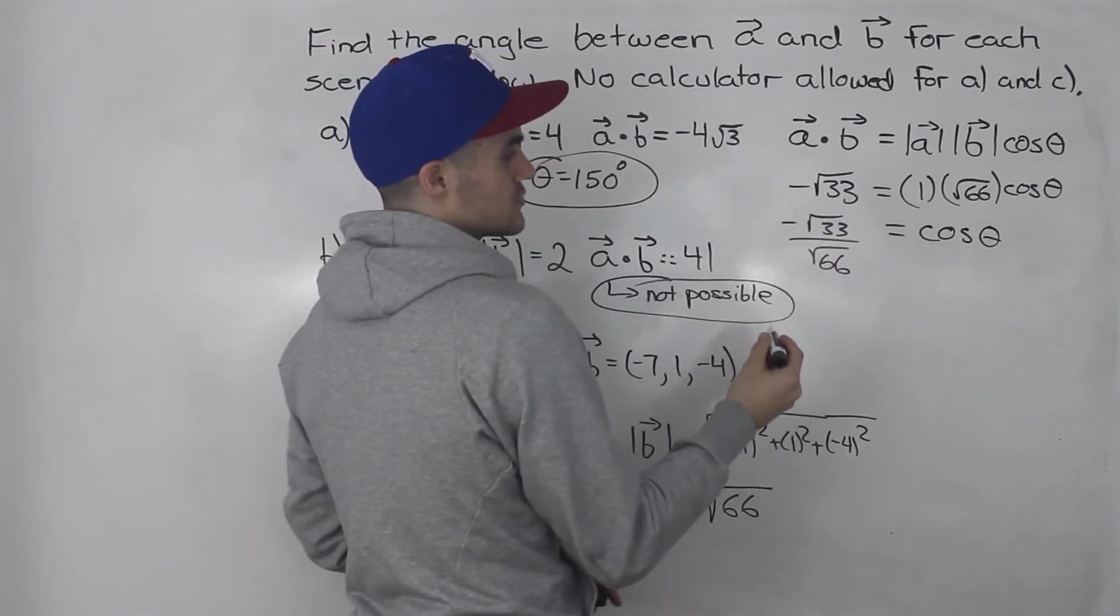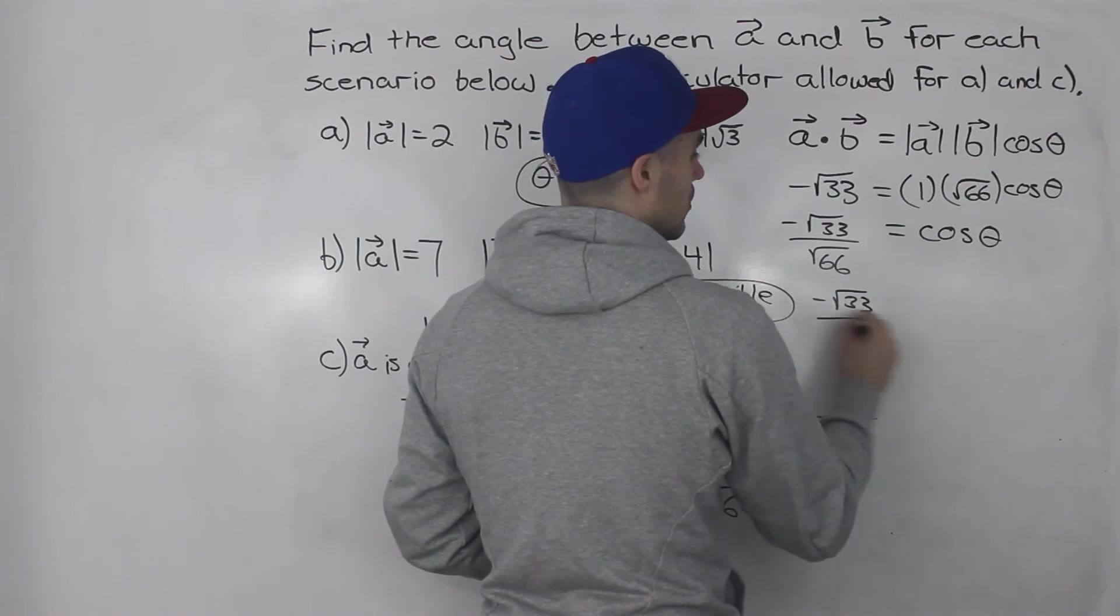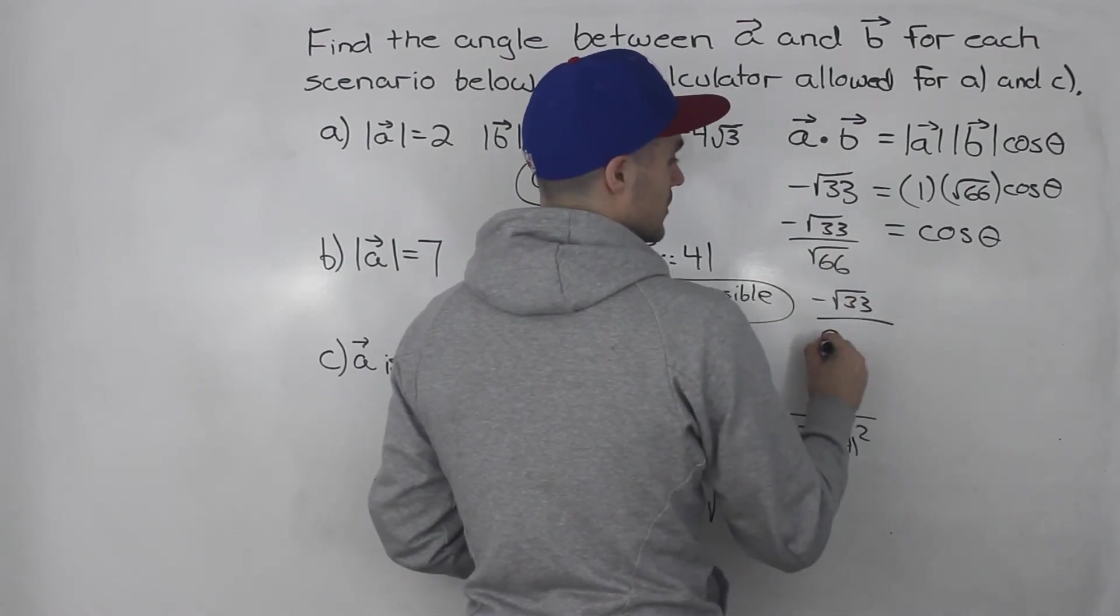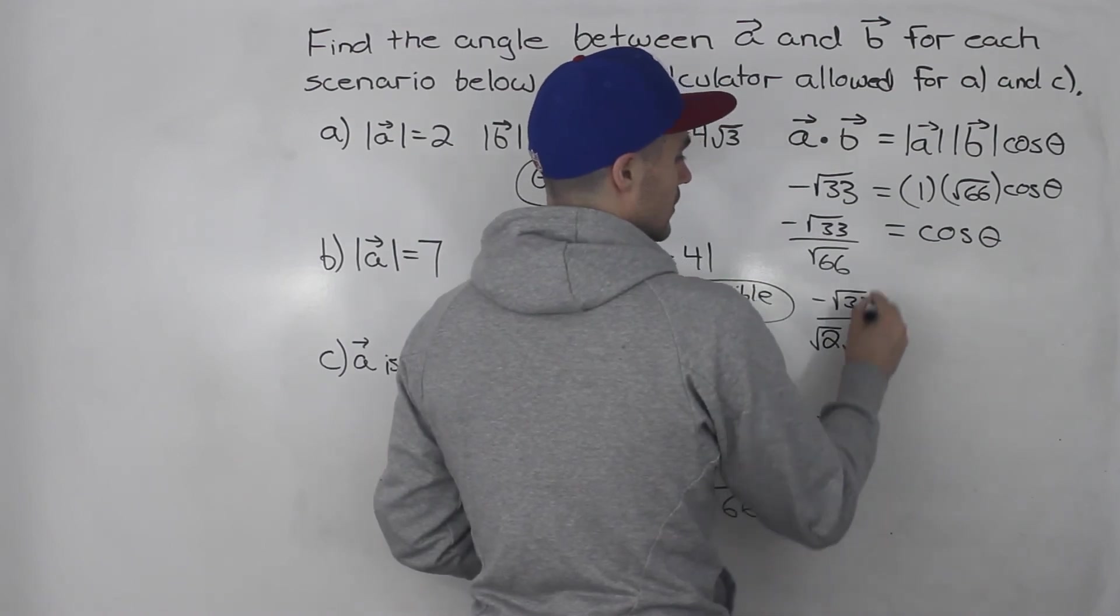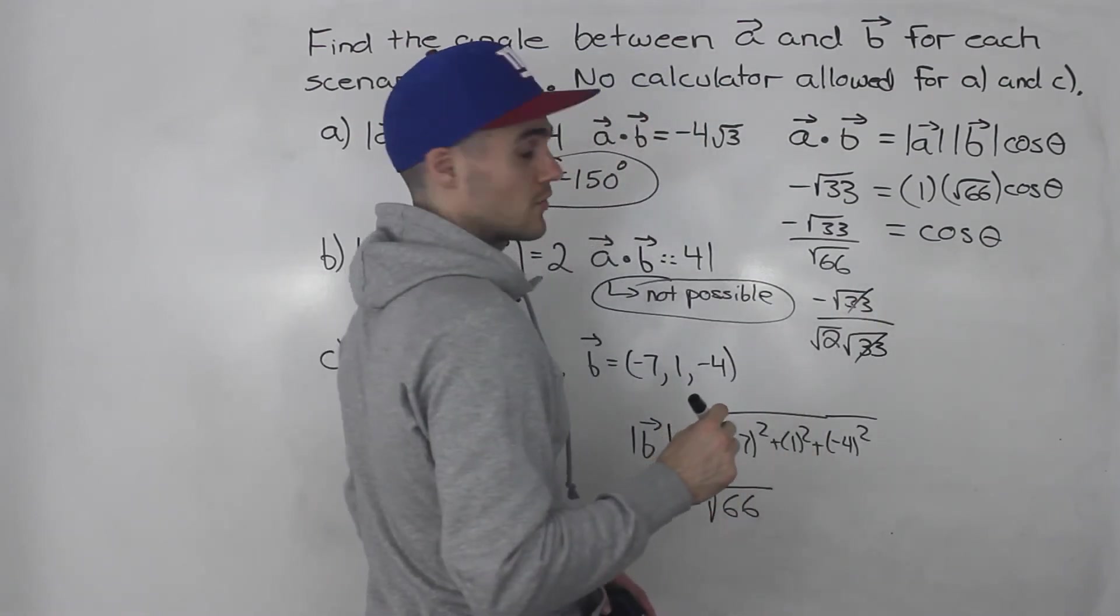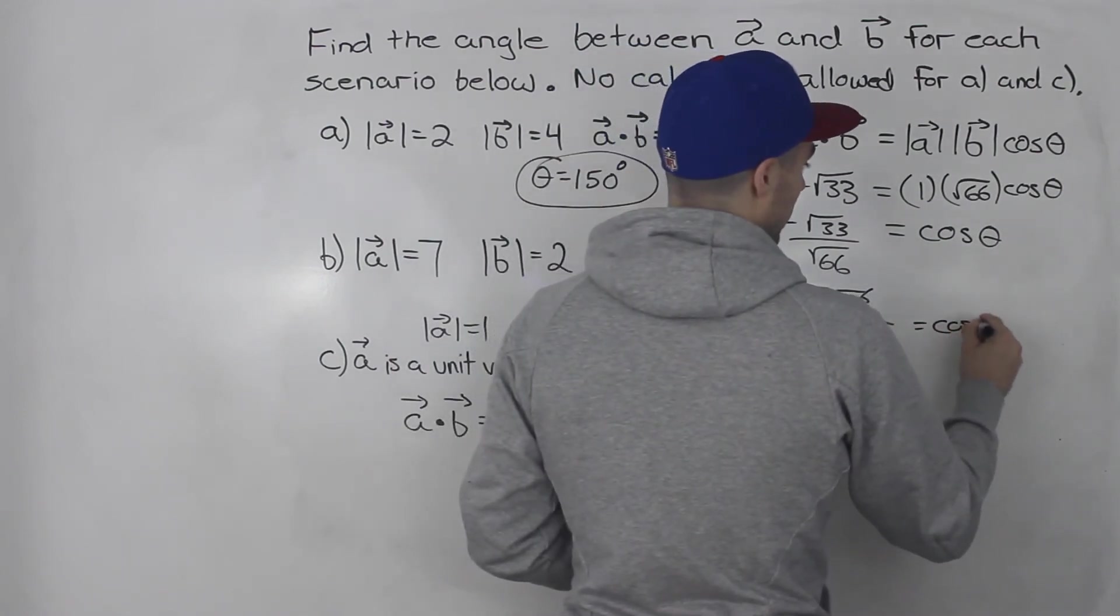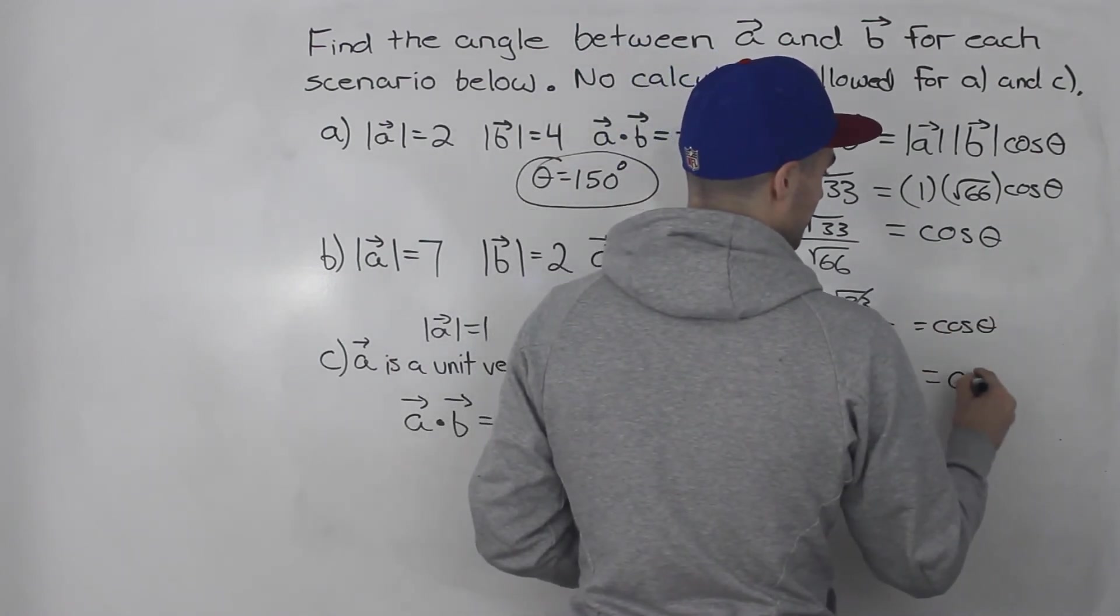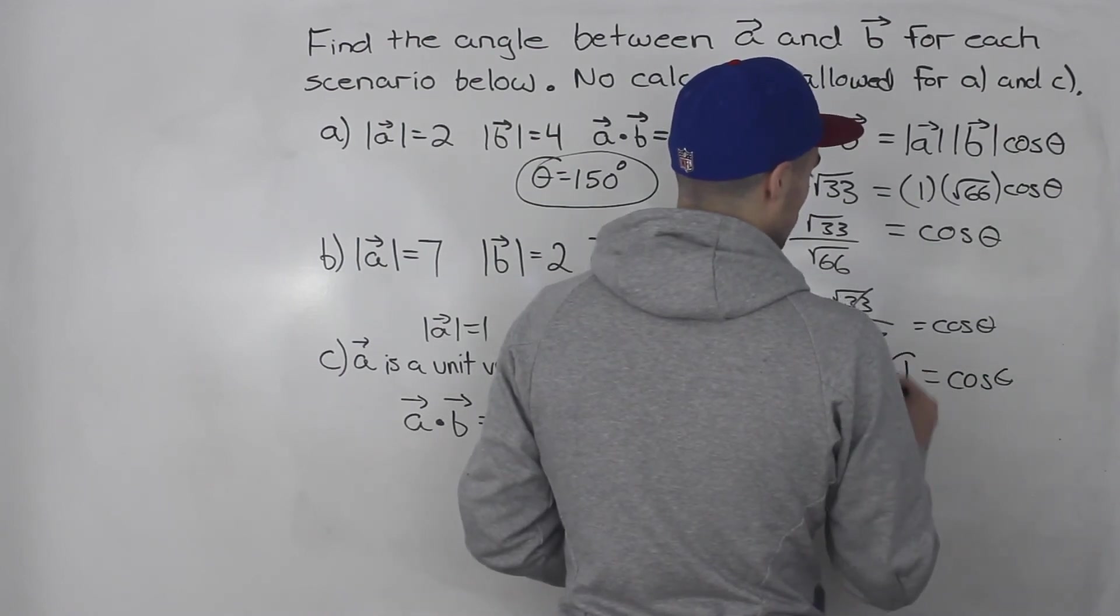And we can divide both of these roots. Another thing we can do is we can take negative root 33 over, split this root up into root 2 times root 33. And then the root 33s cancel out. So basically we're solving when does cos theta equal negative 1 over root 2.